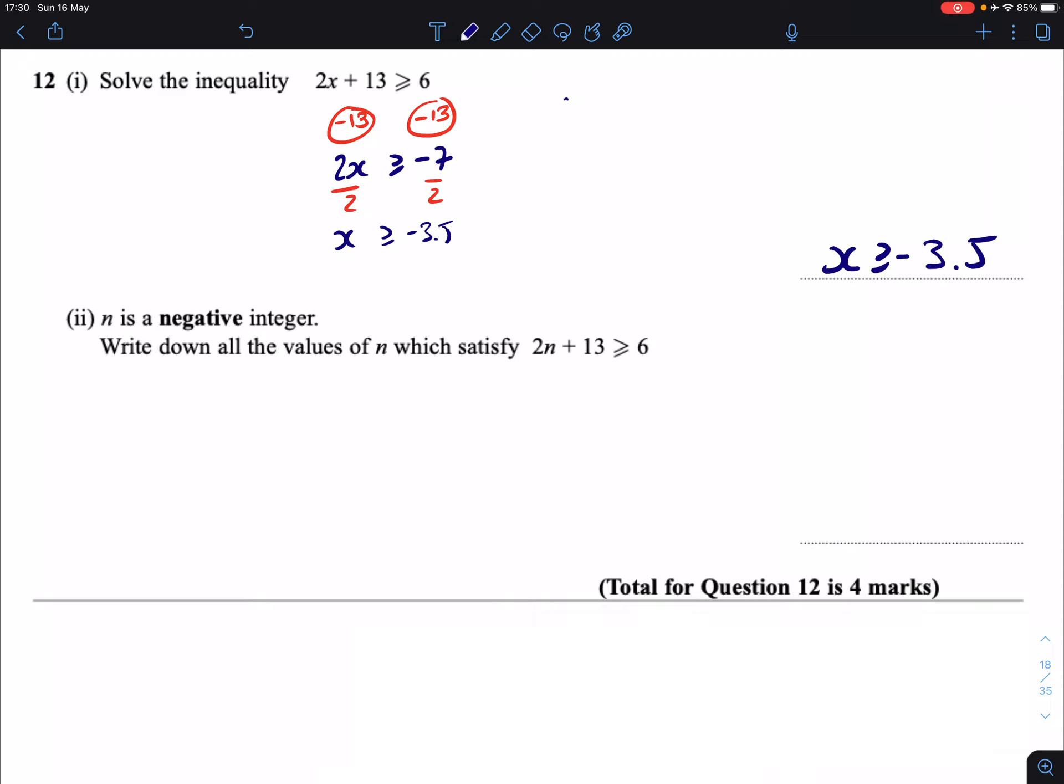So part 2. n is a negative integer. That means it is a whole number that is negative. Write down all the possible values of n which satisfy this.